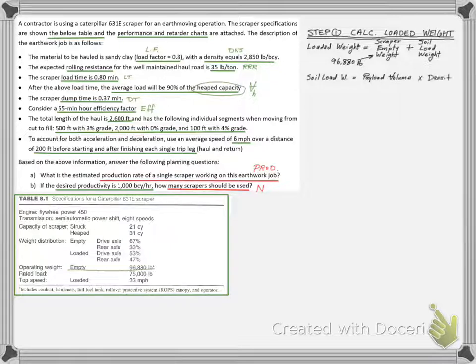The soil weight we need to calculate based on the planned payload and soil density. The payload is planned to be 90% of the heaped capacity of 31 loose cubic yards. However, we need to calculate the payload in bank cubic yards to match it with the production target. So we will multiply by the load factor that's increased by 10% to account for the scooping compaction that happens in the scraper bowl.